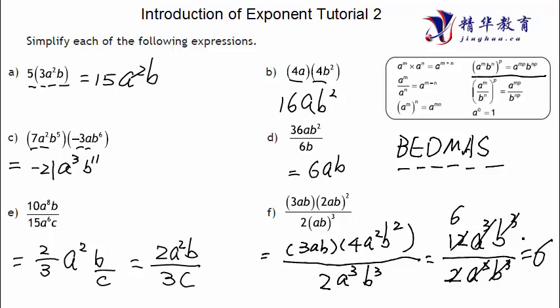To summarize: when simplifying exponent expressions, make sure you apply the exponent rules, look for constant terms together, A terms with A terms, B terms with B terms — you're looking for like terms. If the base is not the same, you cannot merge them. I hope you learned something. If you like my videos, please subscribe. If you have any questions, please comment below and I'll answer in my next video. Thank you for watching.